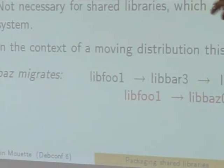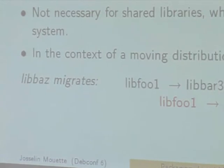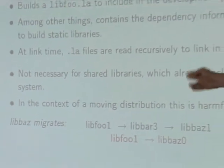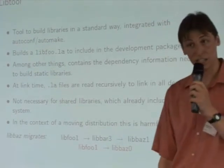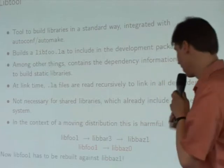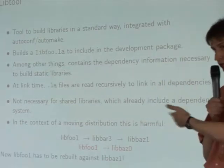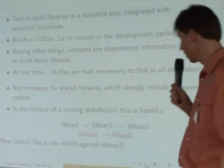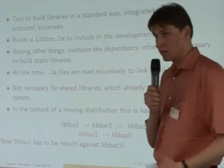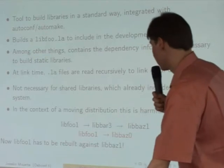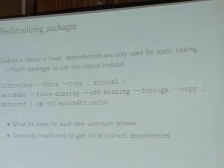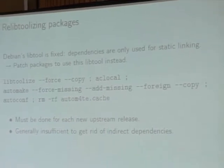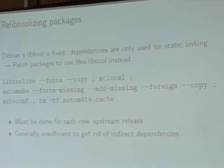Now libbaz has a migration — you now have libbaz1. Guess what happens? You are now linking to two versions of the same library without any need for it. You have to rebuild the new libfoo package against the new libbaz, and of course it's added complexity. The Debian libtool is fixed to not exhibit this behavior — dependencies are used only for static linking, and when you are linking dynamically they are not recursed.